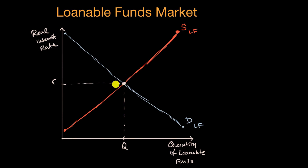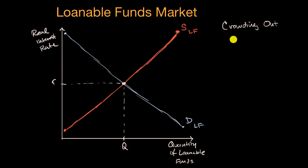In this video, we're going to use a simple model for the loanable funds market to understand a phenomenon known as crowding out. This refers to when a government borrows money, it could, to some degree, crowd out private sector borrowing and investment, and it could have negative consequences for the economy — less investment and less economic growth. Let's see how crowding out can happen using this loanable funds market model.